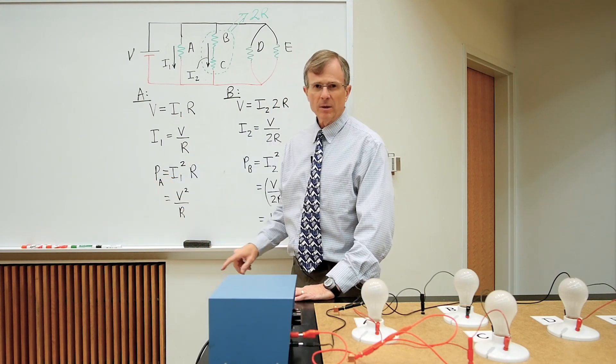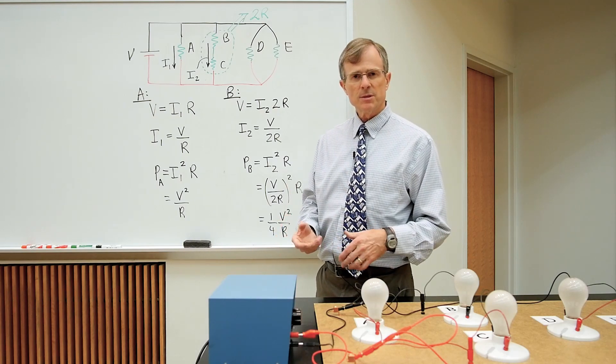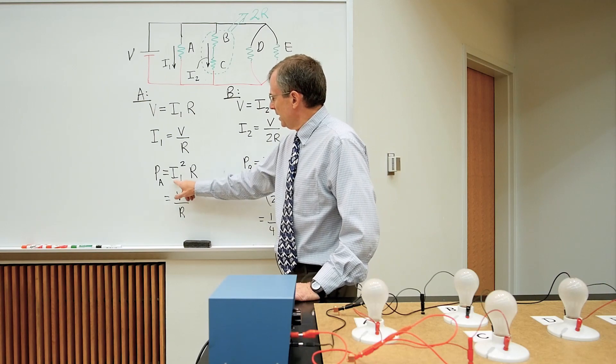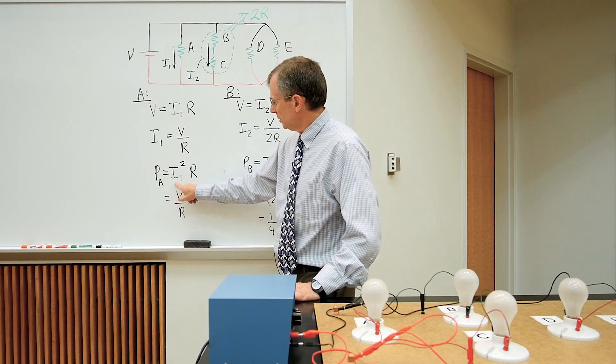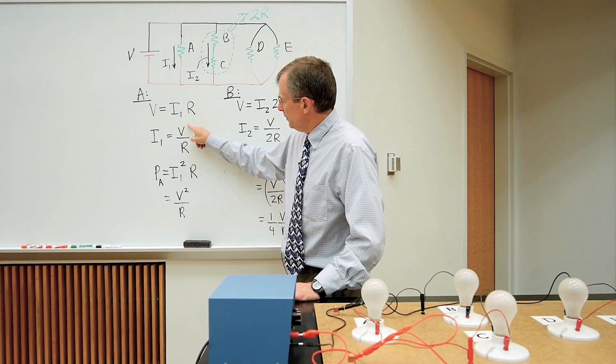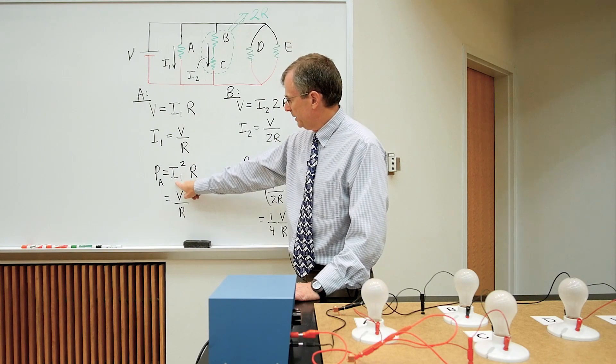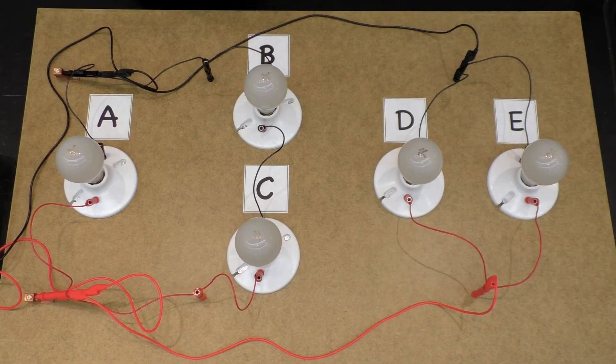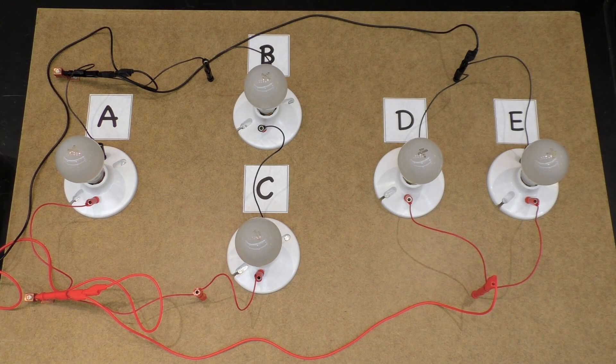We plug that into the power equation, power dissipated in a resistor is I squared times R, and I'm plugging this result into here, that'll be V squared over R squared, plugged into here, times R, which just gives me V squared over R, for the power dissipated in that bulb A.